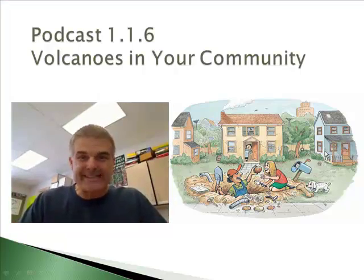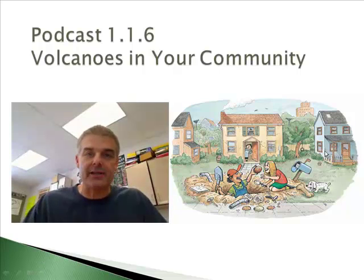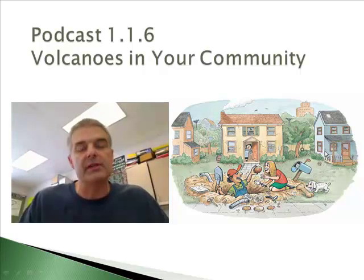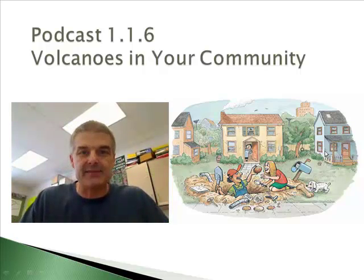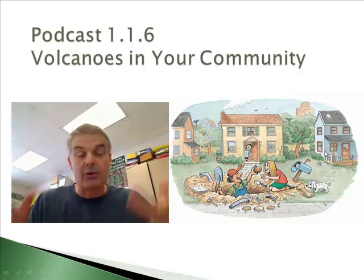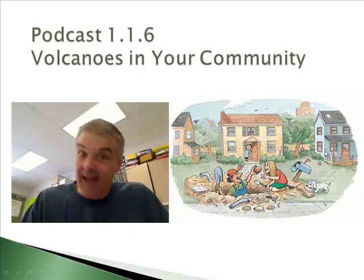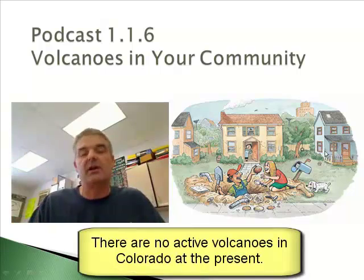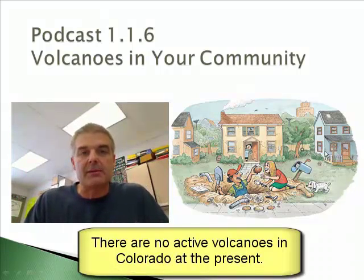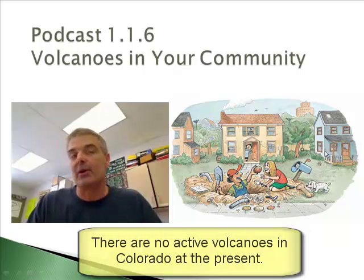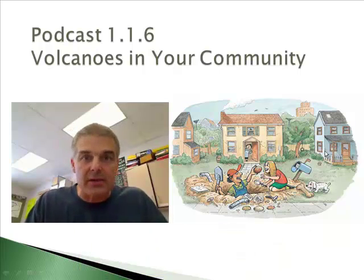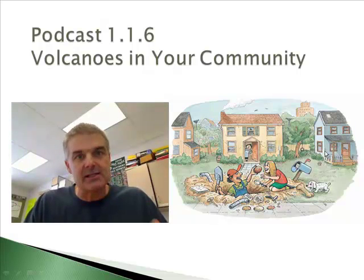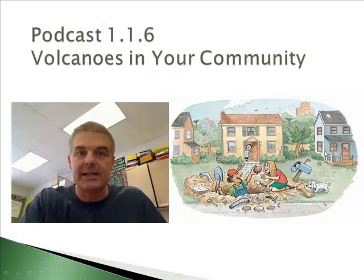Welcome, folks, to 1.1.6, the last one in this particular chapter. We're going to talk about volcanoes in our community. What kind of volcanic activity do we see around us? Here in Colorado, we see lots of volcanic-ish activity — not that there are lots of volcanoes here. We'll talk about volcanoes around where we live, and also what kinds of rocks come out of volcanoes. We've learned about ash, and we're going to be more specific about varieties of rocks.